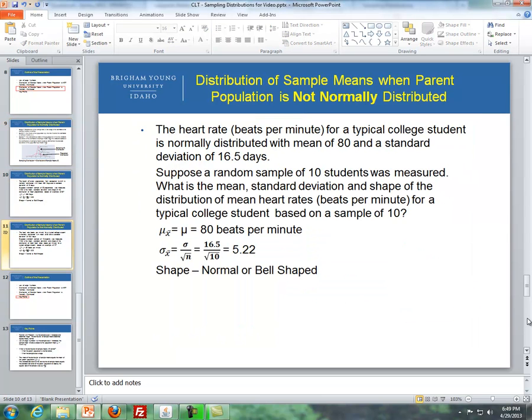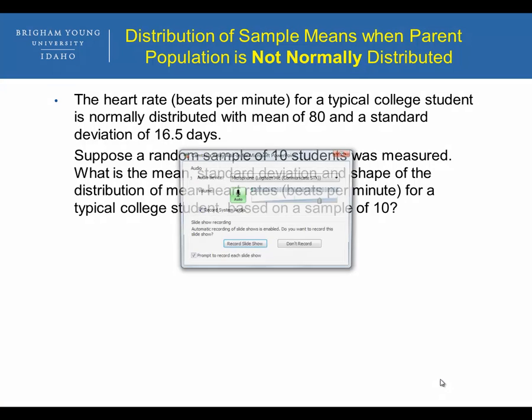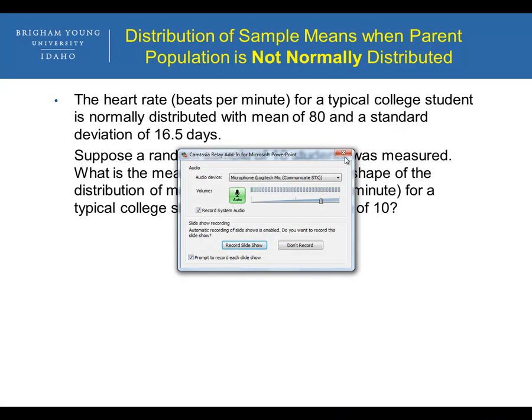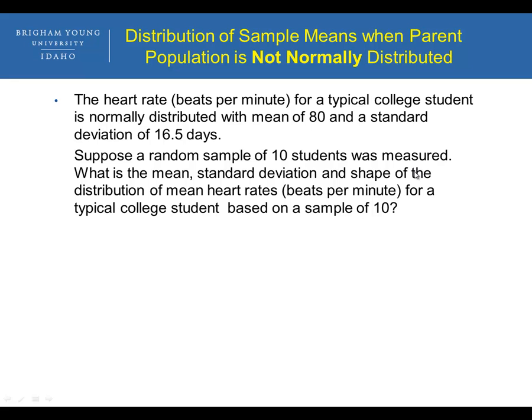Let's go through the last example. The heart rate for a typical college student is normally distributed with a mean of 80 and a standard deviation of 16 and a half. Suppose a random sample of 10 students was measured. What is the mean, standard deviation, and shape of the distribution of mean heart rates for a typical college student based on a sample of 10?